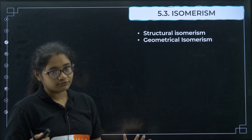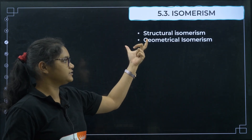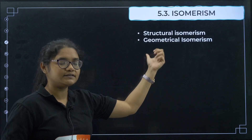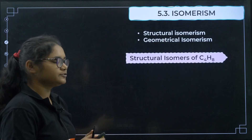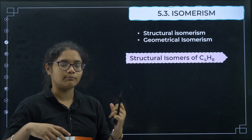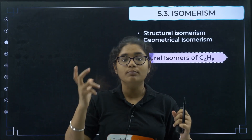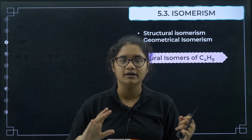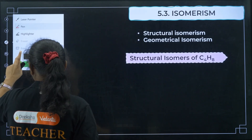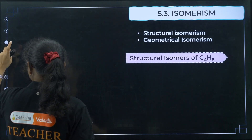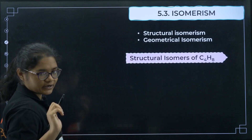There are two types of isomerism in alkenes: structural isomerism and geometrical isomerism. Structural isomerism is where the names of different compounds are different. For example, for C4H8, different structures can be drawn.